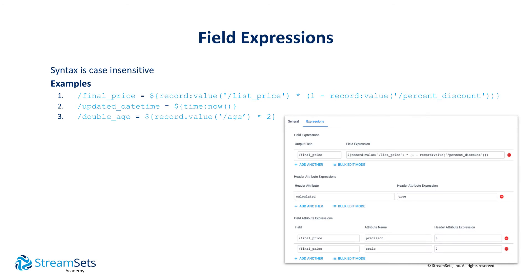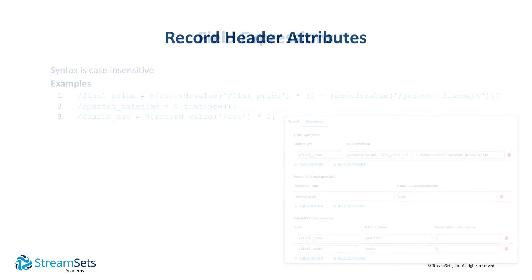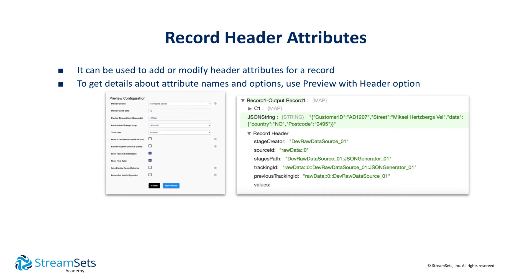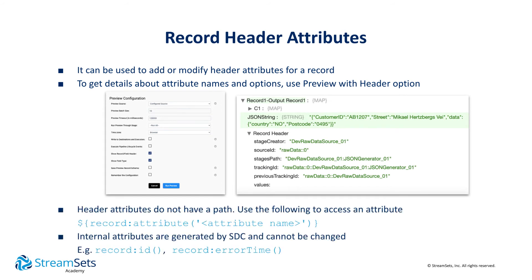We can create very natural and easy-to-read arithmetic expressions. Whether using the Expression Evaluator processor or other processors, when previewing a pipeline, the preview can be configured to show the record and field headers. There are also functions to retrieve user and system record attributes.